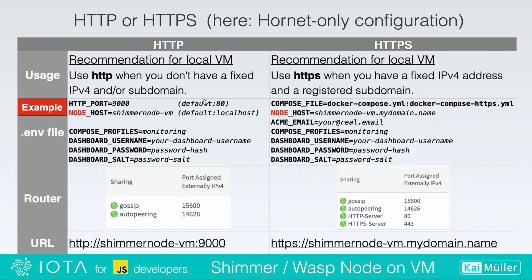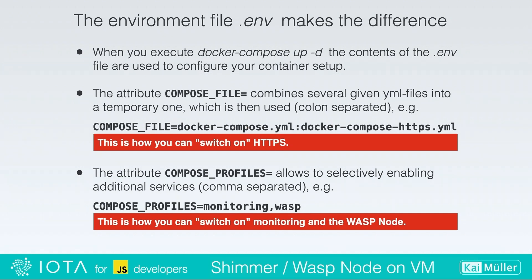In this table I compare the different configurations between HTTP and HTTPS. My recommendation is that you should of course use HTTPS when you are able to — that means you have a fixed IPv4 address and a registered subdomain — because it's closer to the real world. In all other cases and for development you could also use HTTP. The configuration takes place in the .env file, and when you use HTTPS you have to open additional ports in the router. So the .env file makes a difference.